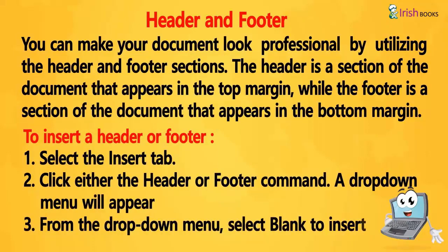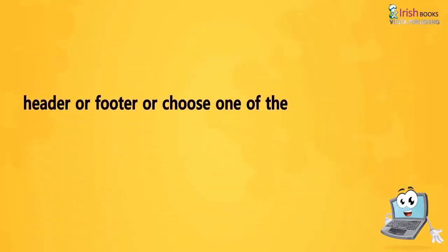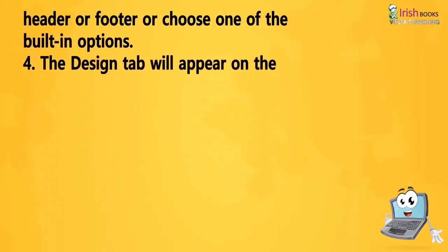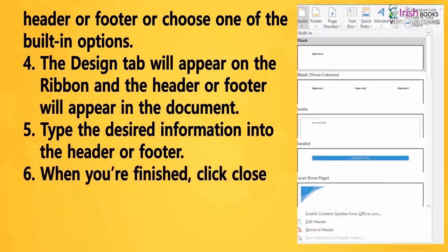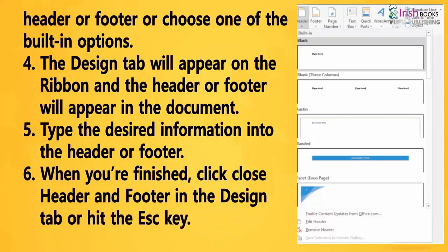Click either the Header or Footer command and a drop-down menu will appear. From the drop-down menu, select Blank to insert a blank header or footer, or choose one of the built-in options. The Design tab will appear on the Ribbon, and the Header or Footer will appear in the document. Type the desired information into the Header or Footer. When you are finished, click Close Header and Footer in the Design tab or hit the Escape key.